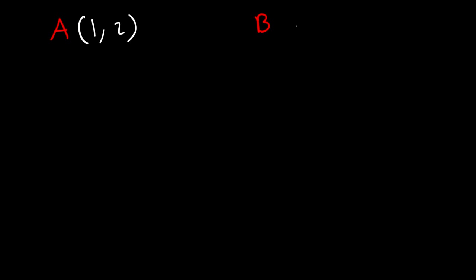In this video we're going to talk about how to use the distance formula to calculate the distance between two points. Let's say we have two points, point A and point B. The coordinates of point A are (1, 2) and the coordinates of point B are (9, 17). Use the distance formula to calculate the distance between those two points.